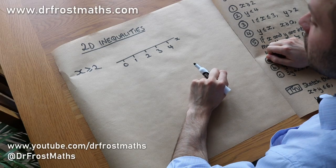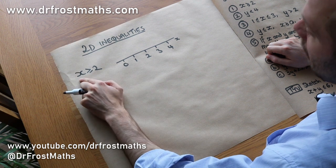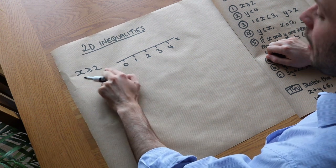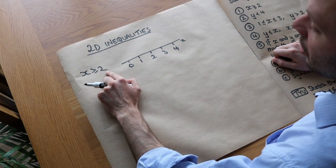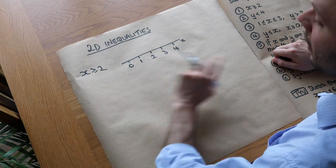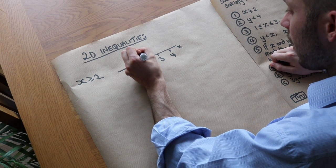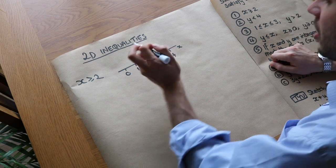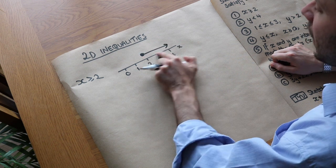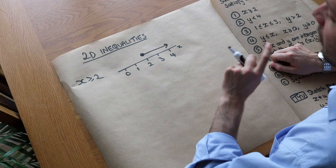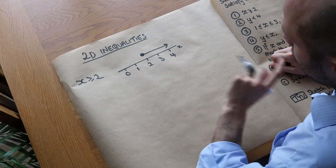Hello and welcome to this video on 2D inequalities. We've already seen how to represent a single variable inequality graphically. When we have x ≥ 2, x can be any value greater than or equal to 2, and we represent that on a number line with a filled circle on 2 and an arrow going upwards. If you haven't seen my video on representing inequalities on a number line, please watch that first.